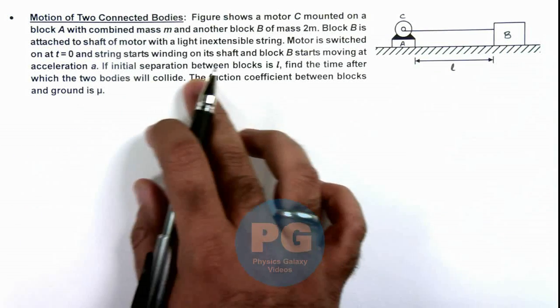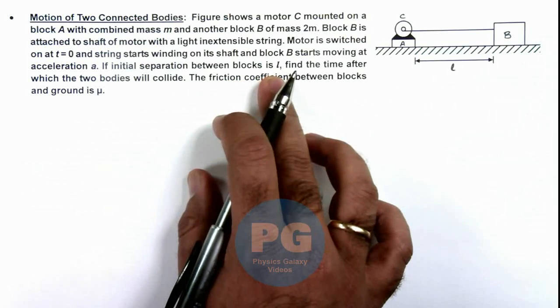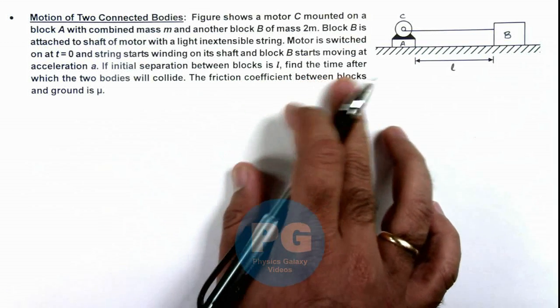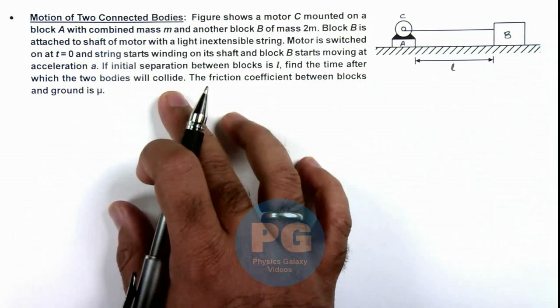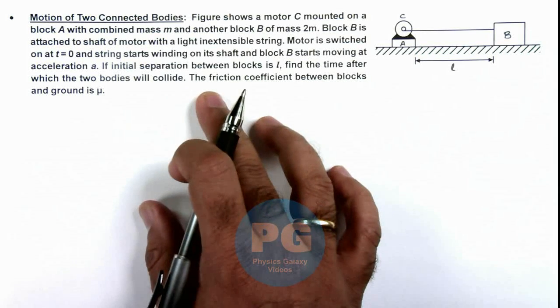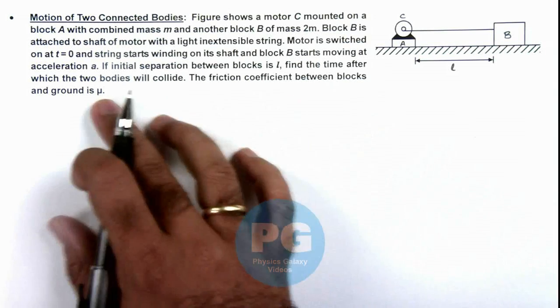It is saying if initial separation between the blocks is L, we are required to find the time after which the two bodies will collide, and the friction coefficient between blocks and ground is μ.